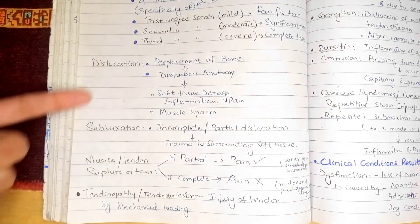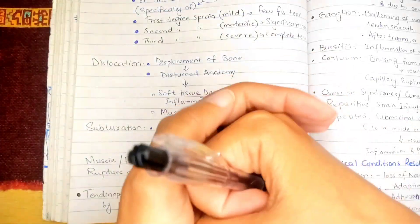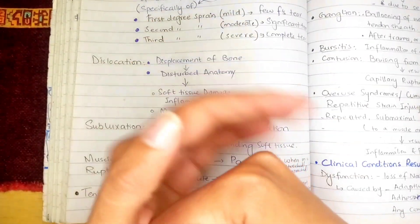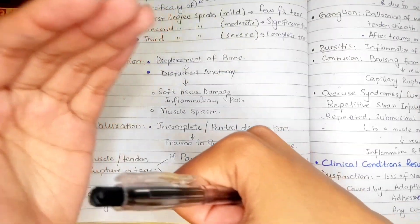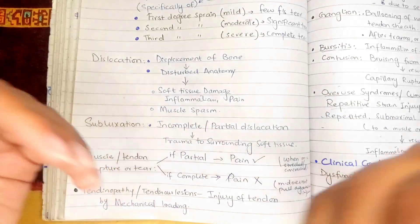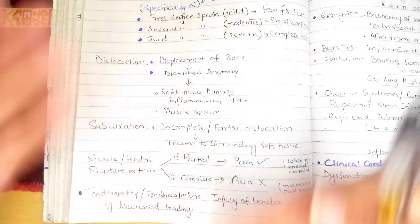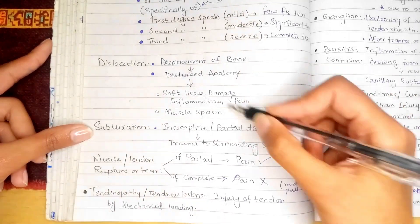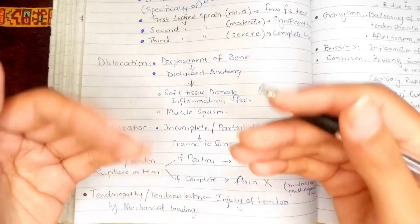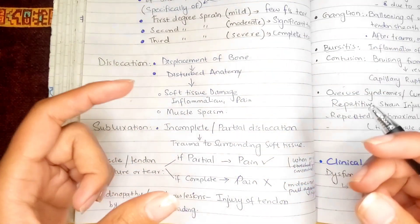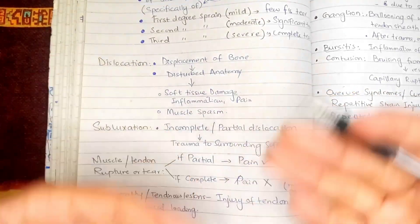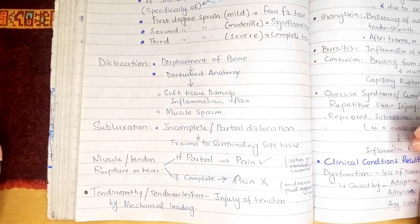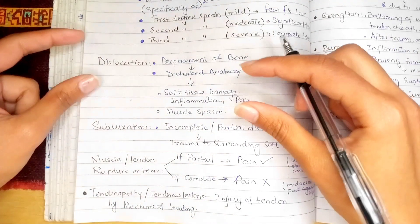In dislocation, the bone is completely displaced from the joint. For example, if we take the hip joint, the head of the femur is fully displaced. This disturbs the anatomy, causing significant damage and inflammation of the surrounding soft tissue and pain. This pain can cause reflex muscle guarding, which leads to vascular and metabolic changes, and these circulatory changes in turn cause muscle spasm.